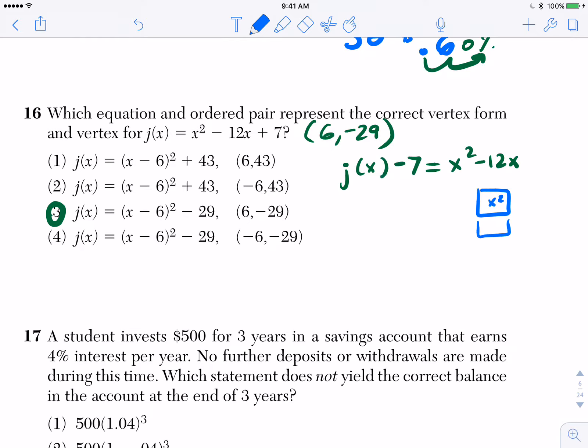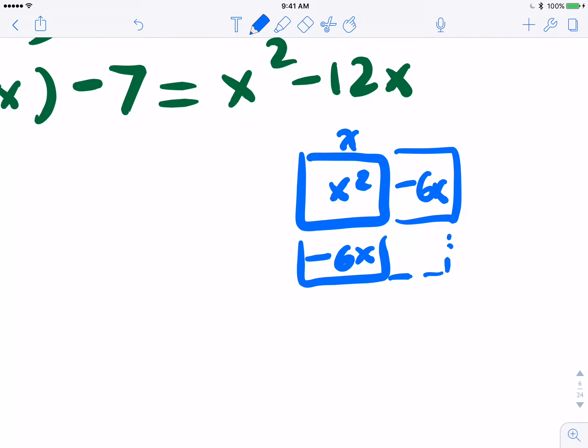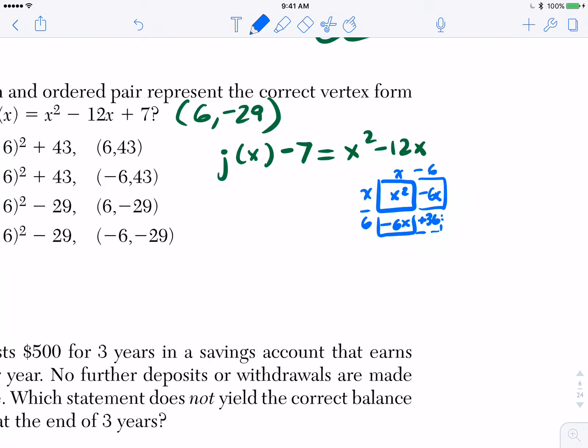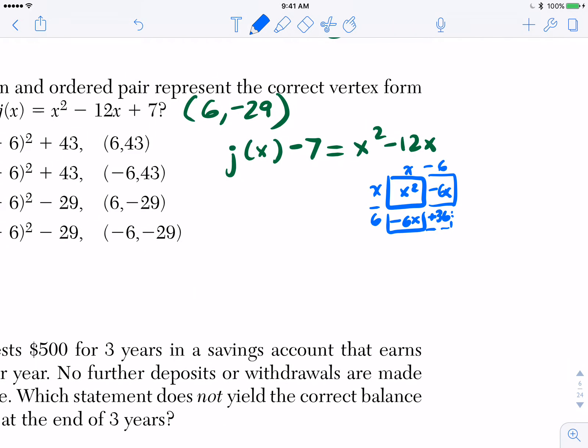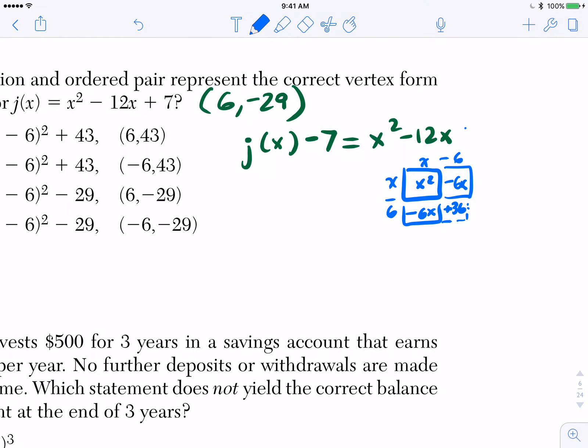I'm going to split the 12x into two groups of -6 and kind of think of a box method here. So far I have this, what's that missing right-hand component to make this a perfect square? Positive 36. So it's gonna be half of B squared: half of 12 is 6, squared is 36.